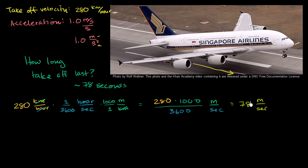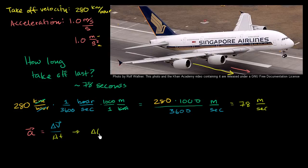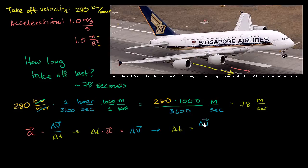Let's verify this with the definition of acceleration. Remember, acceleration is a vector quantity, and all directions here are along the runway. Acceleration equals change in velocity over change in time. We're solving for change in time, so multiply both sides by change in time: change in time times acceleration equals change in velocity. Then divide both sides by acceleration: change in time equals change in velocity divided by acceleration.